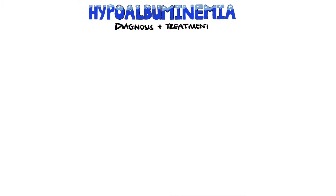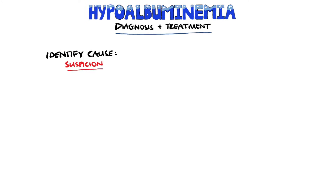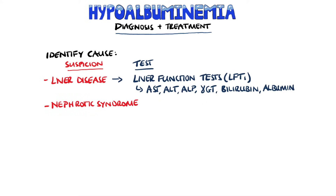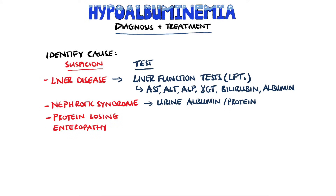In terms of the diagnosis, when albumin levels are found to be low, tests are performed to identify the cause, which include liver function tests assessing for liver disease, urine albumin and protein levels to assess for nephrotic syndrome. To assess for a protein-losing enteropathy, we could look at levels of alpha-1 antitrypsin in the stool, which, if elevated, suggests a protein leakage or increased permeability of the intestinal mucosa.